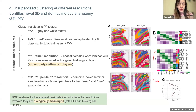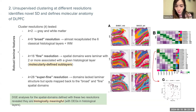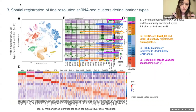With the super-fine resolution K equal to 28, the domains lacked laminar structure and spots mapped back to the broad and fine spatial domains. The conclusion is that too few clusters don't capture the laminar architecture, while too many clusters with super-fine resolution lose that architecture and become noisy. The broad and fine resolutions were considered the most biologically meaningful, as spatial domains enriched at those resolutions were also enriched in histological papers.